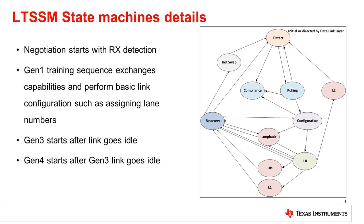If there is no response within 24 milliseconds, the root complex sends out a compliance pattern. The Gen1 training sequences exchange capabilities between the root complex and the endpoint. The link partners advertise capabilities, such as data rate supported or their compliance state. If a higher data rate is confirmed by both ends from configuration, a recovery state is initiated. Since going to the next data rate is a speed change, the link will go idle, and once there is a signal, the link partners would exchange training sequences at the new Gen3 data rate, while equalization is started and finalized.